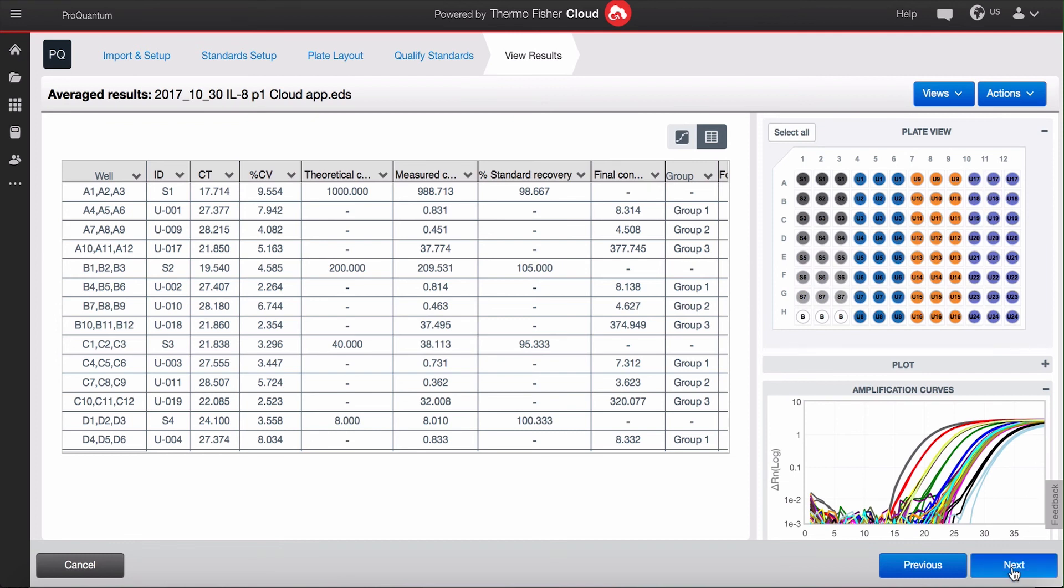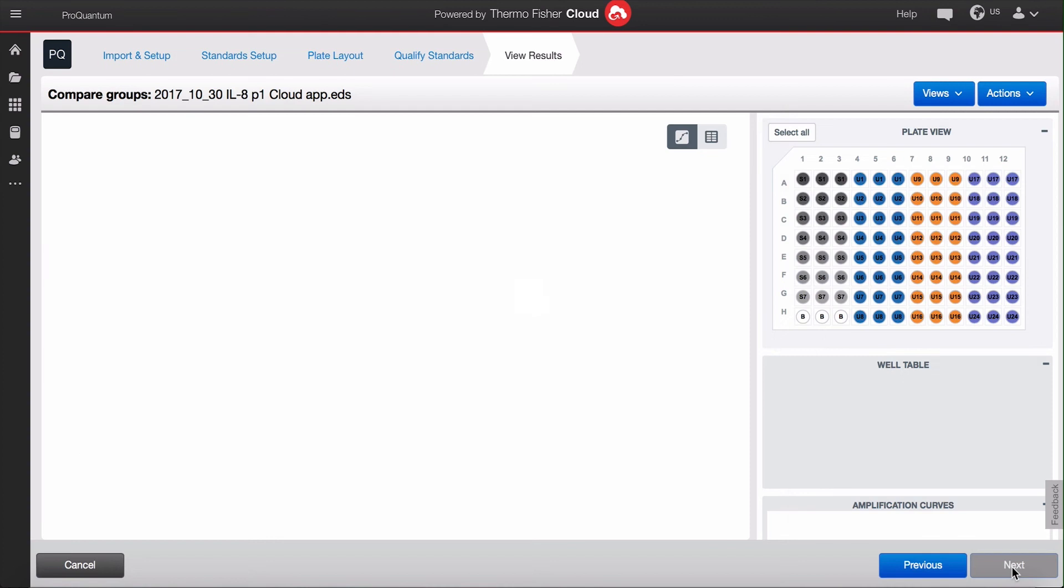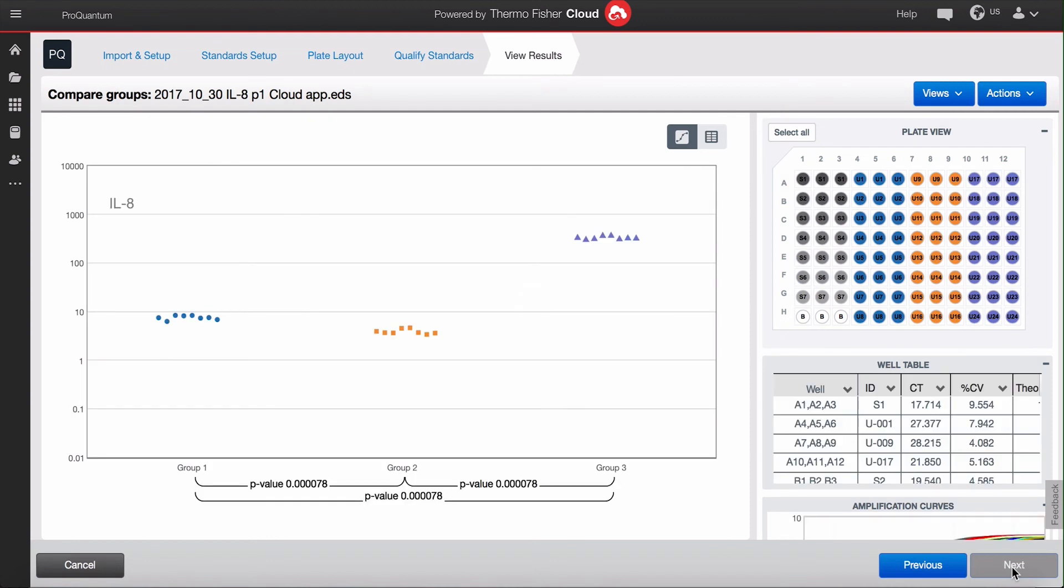If you have groups to compare, you can click next to view the statistical comparison. Go to the actions menu to export your data into Excel, PDF, or GraphPad Prism.